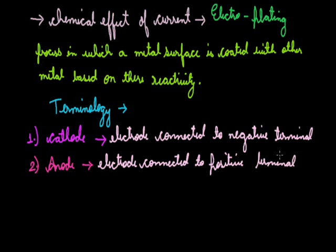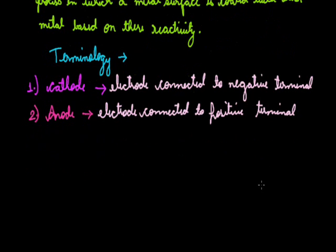In a cell, we have positive and negative terminals. The wire or electrode connected to the positive terminal is anode, while that connected to the negative terminal is cathode. Now, let us discuss what an electrode is. An electrode is a piece of metal or a metal wire through which current enters or leaves.